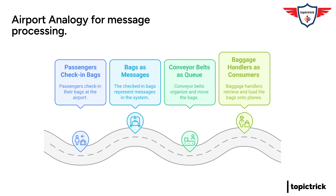Welcome back. Here's another analogy that might be helpful: an airport baggage handling system. Think of the passengers checking in their bags — they're like the producers, creating the messages, which in this case are the suitcases full of all their stuff. The conveyor belts that carry the bags are our queue: they keep everything organized, moving in a specific order, and make sure no bags get lost. And the consumers would be the baggage handlers, retrieving the bags from the belts and making sure they get loaded onto the right planes. It really shows how message queues can keep everything running smoothly, even when things are super busy.